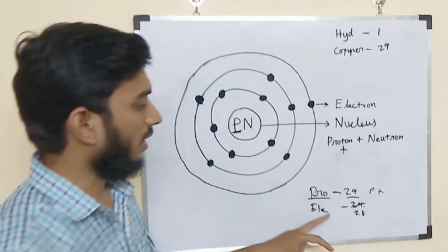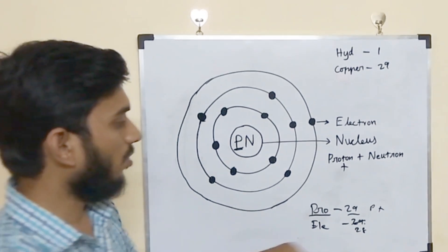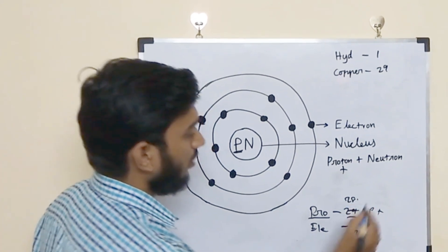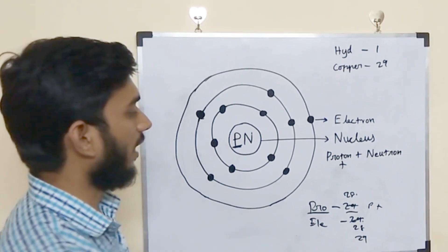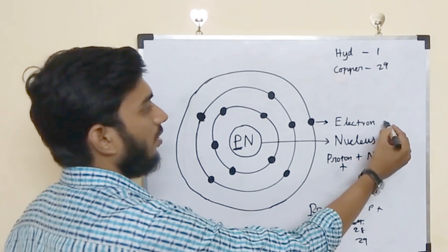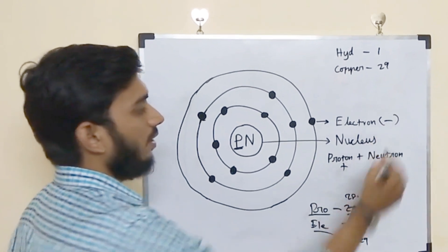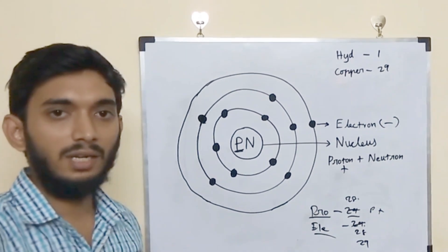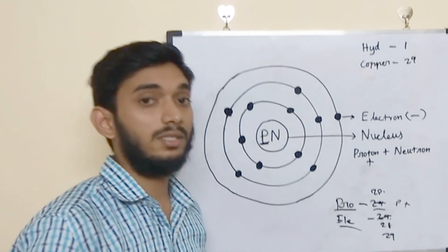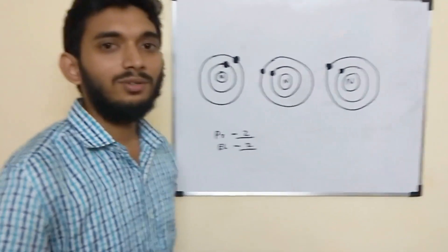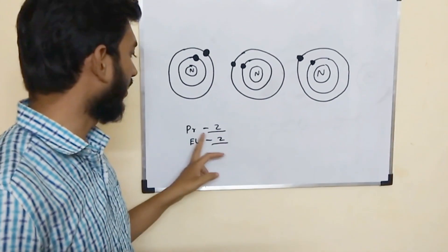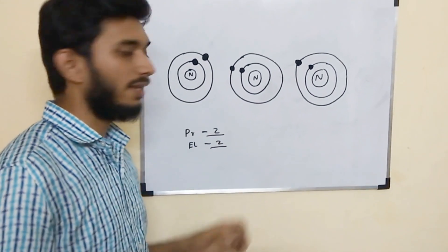If the electron count is greater than the proton count, the atom becomes negative. If protons exceed electrons, then the atom is positive. You must consider the atom in terms of its protons and electrons.